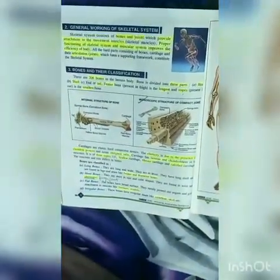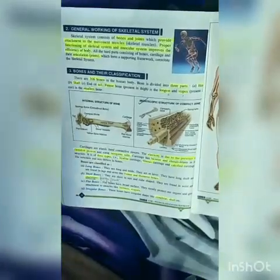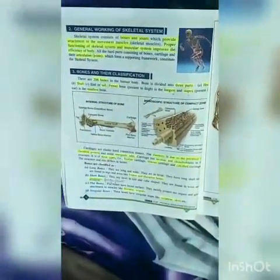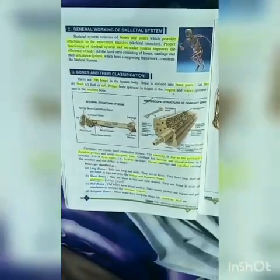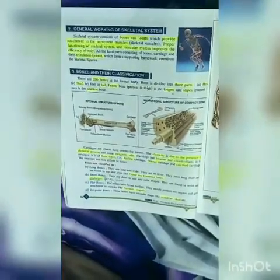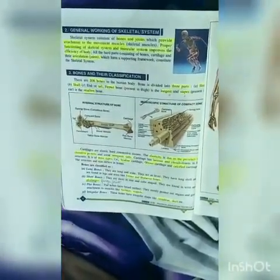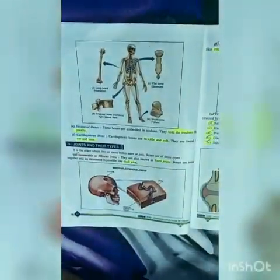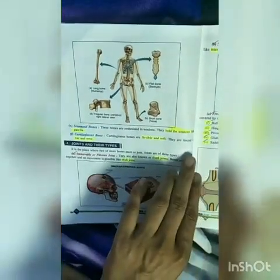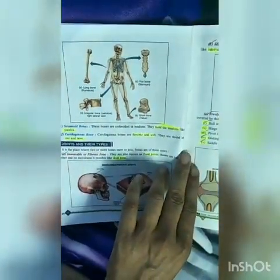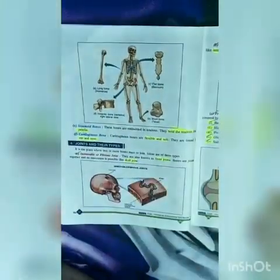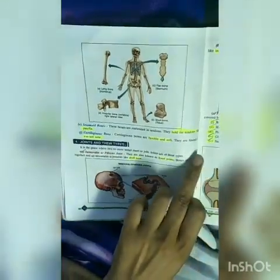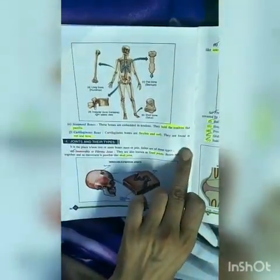Flat bones have a broad surface and mostly protect our organs, giving attachment to muscles — examples include the sternum and scapula. Irregular bones have an irregular shape, like vertebrae and the skull. Sesamoid bones are embedded in tendons and hold the tendons, like the patella. Cartilaginous bones are flexible and soft, and are found in the ear and nose.